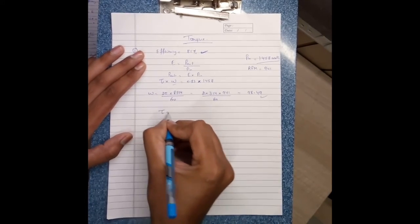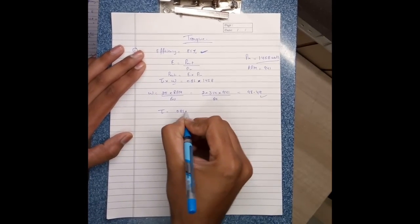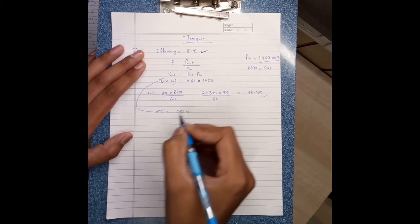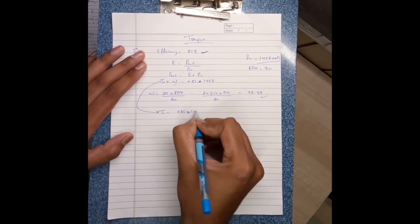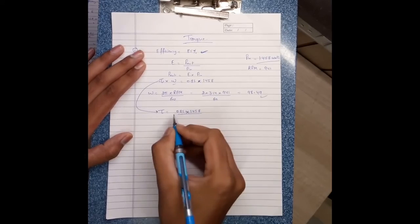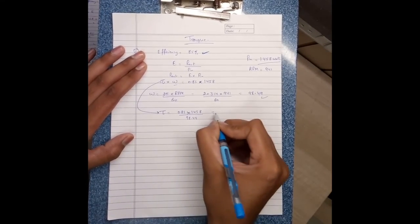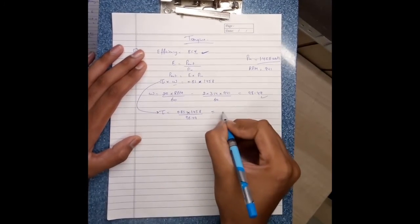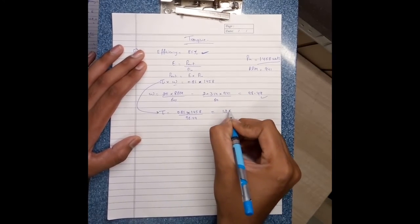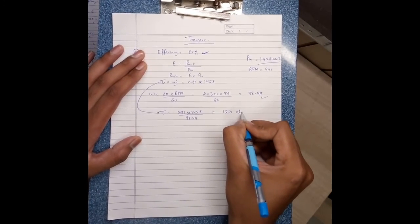Torque equals 0.85 times 1458 divided by omega, 90.4, which equals 12.5 Newton-meters.